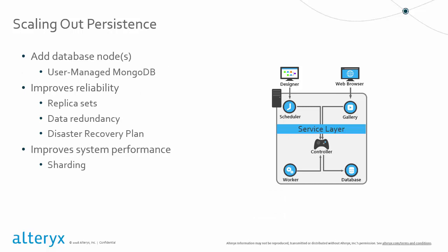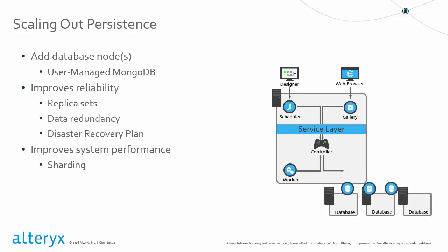The second way to scale is through more database nodes. If data redundancy is needed, consider scaling out the database nodes. The default embedded MongoDB is contained within a single node, but once more nodes are needed, MongoDB will begin to be user-managed instead of embedded. For creating replica sets or database sharding, it is recommended to review MongoDB's guidelines and documentation for scaling the database.